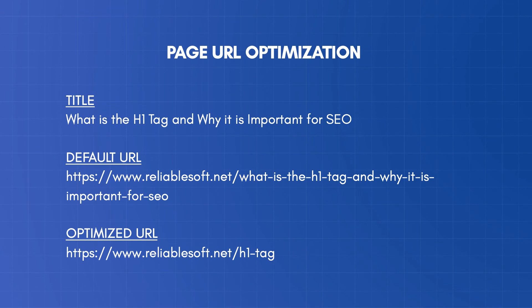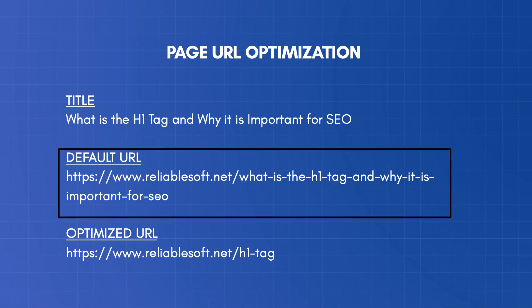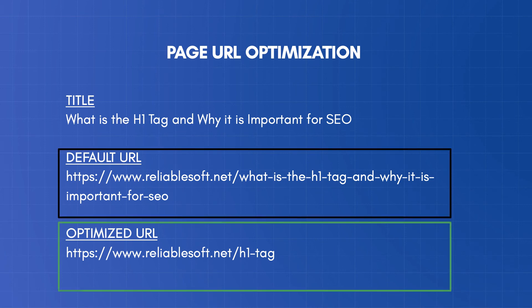Another example: the title of the post is 'What is the H1 tag and why it is important for SEO?' By default, your CMS will create this URL. But a better version is this. This tells both users and crawlers that the page is about the H1 tag.